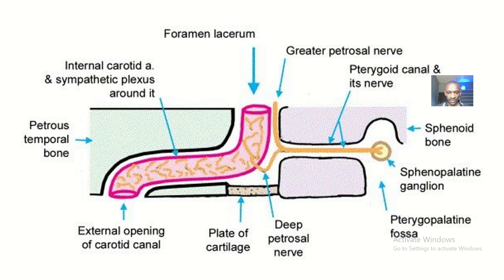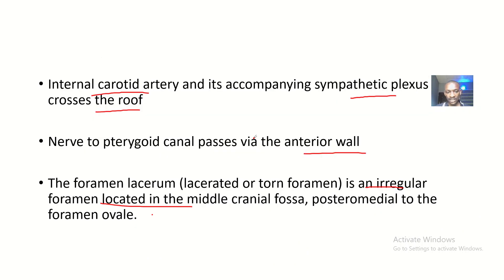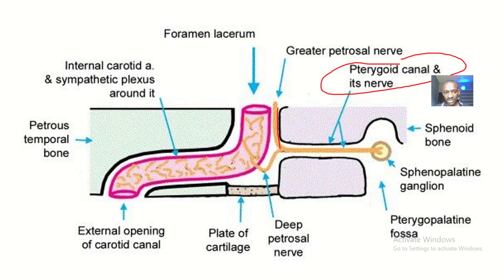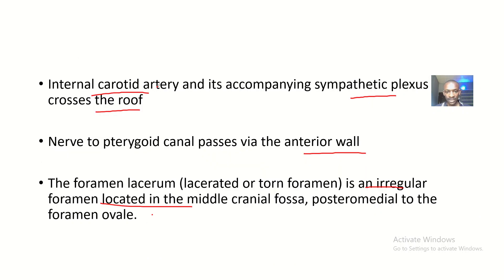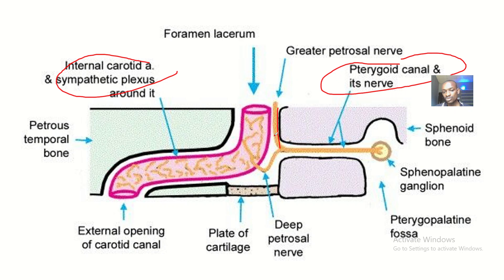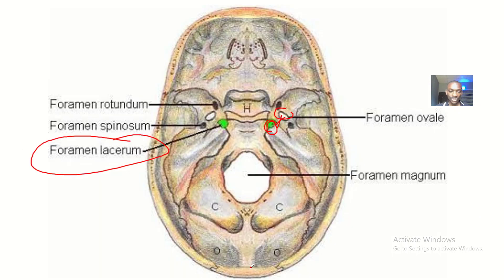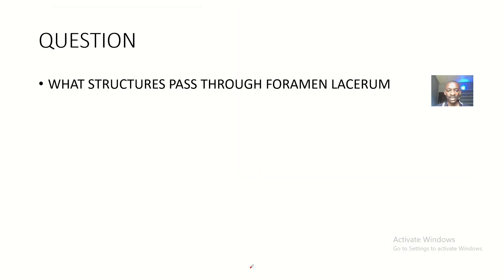In real sense, nothing passes through the foramen lacerum. The nerve to the pterygoid canal passes near the anterior wall, and the internal carotid artery passes near its roof. But nothing actually passes through the foramen lacerum.